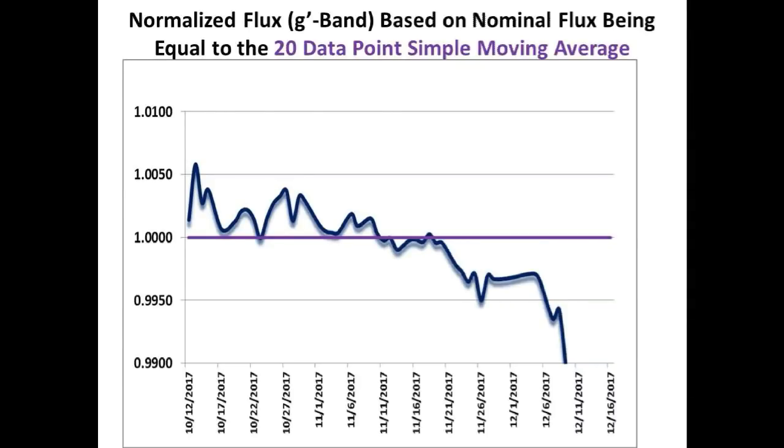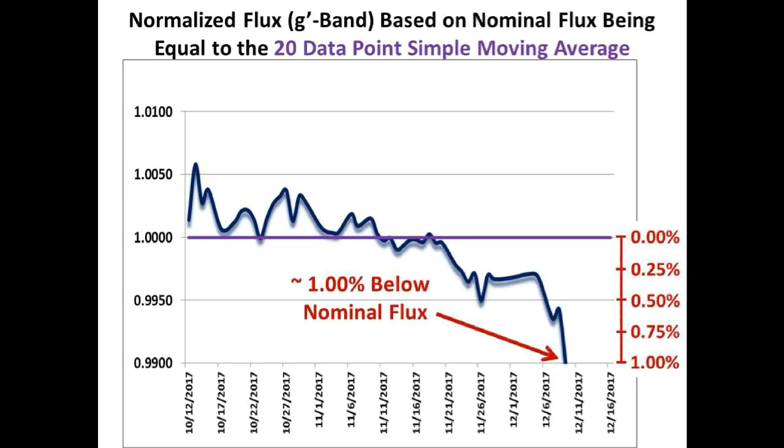Let's look at the short-term light variations of Tabby's Star. From our last update on December 9th, this is the normalized G-band light curve of Tabby's Star using the 20 data point simple moving average as the nominal flux level, and it showed that we were down approximately 1% from the nominal flux level.